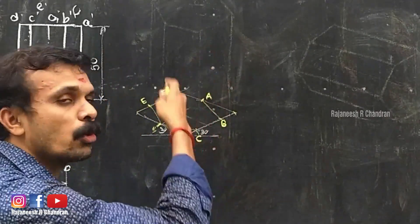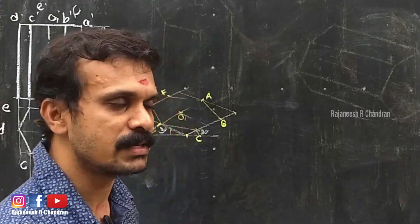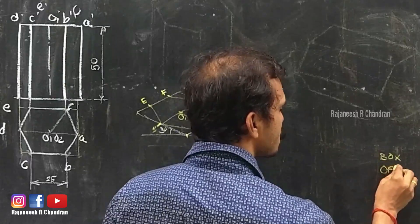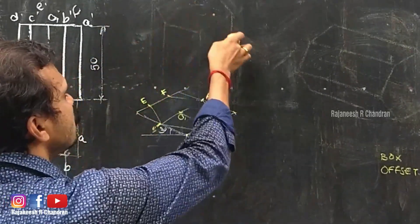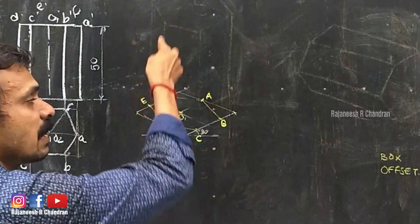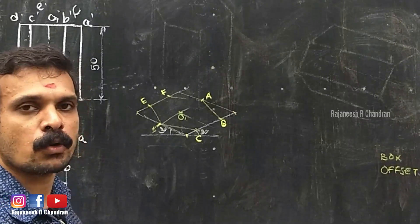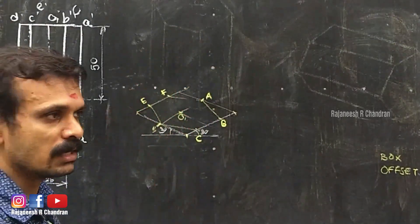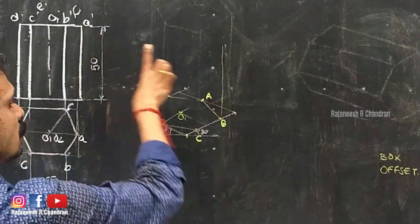For constructing the isometric view of prisms, two methods are available. The first is the box method — create a box and at a height of 50 create another box parallel to it, mark the hexagon on that box and connect them. The second, easier method is the offset method or coordinate method. In the offset method, from every point the corresponding point on the top is at a height of 50, so draw a perpendicular and mark a height of 50 along it.